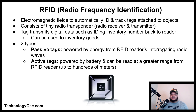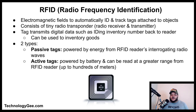Radio Frequency Identification (RFID) uses electromagnetic fields to automatically identify and track tags attached to objects. An RFID tag consists of a tiny radio transponder. When triggered by an electromagnetic interrogation pulse from a nearby RFID reader, the tag transmits a digital identifying number back to the reader. There are two types: passive tags, powered by the reader's radio waves, and active tags, powered by a battery and readable from up to a few hundred meters away.